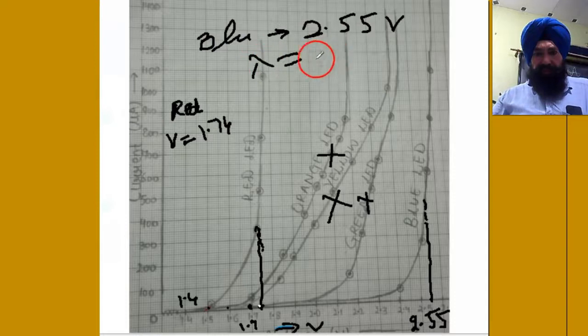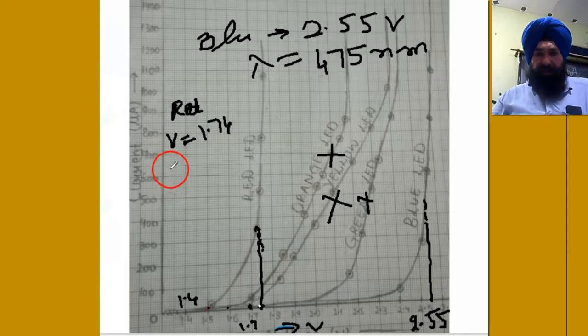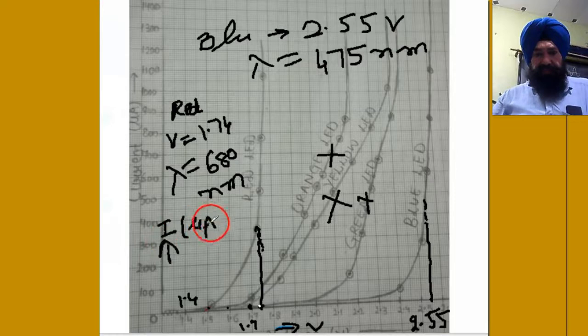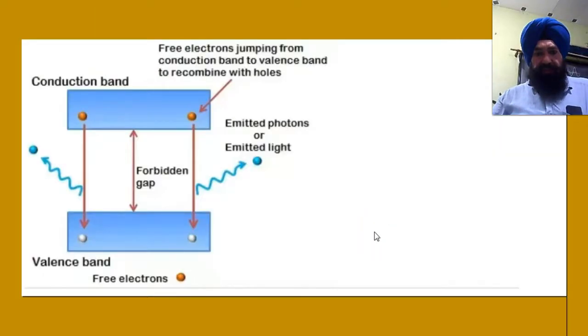For blue, 2.55 volts. And what is the wavelength of the blue color? 475 nanometer. And red wavelength is 680 nanometer.